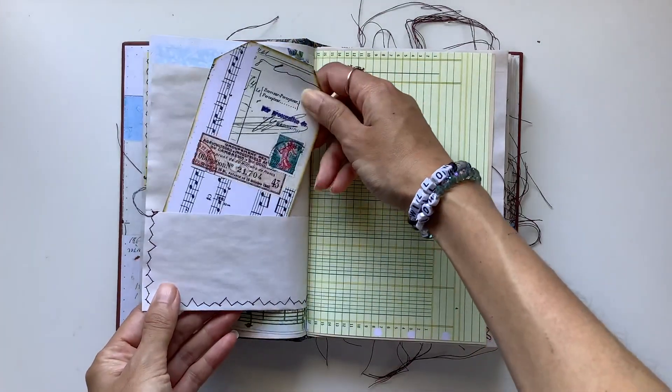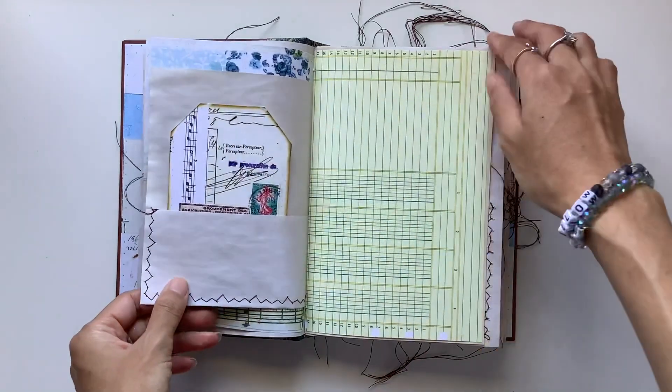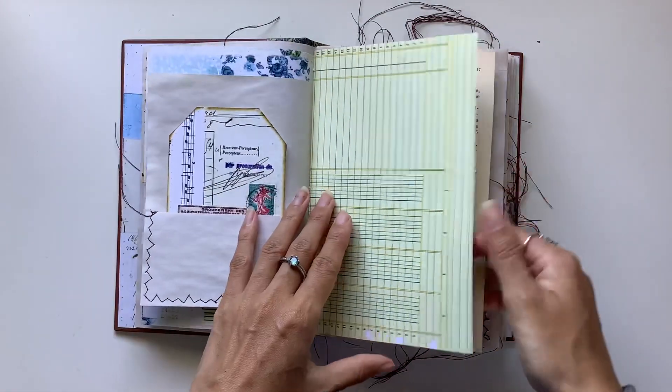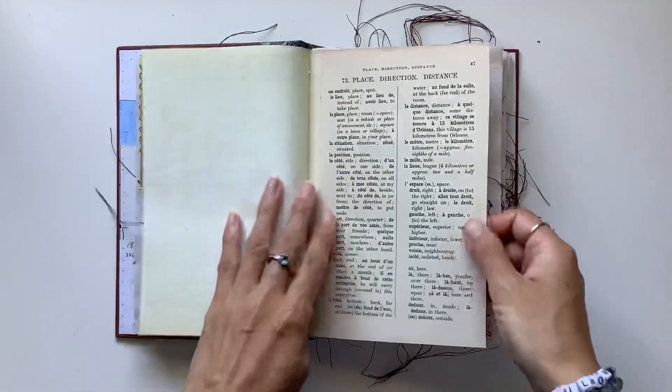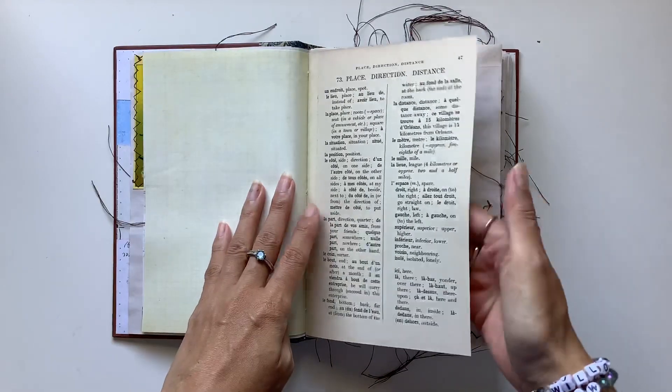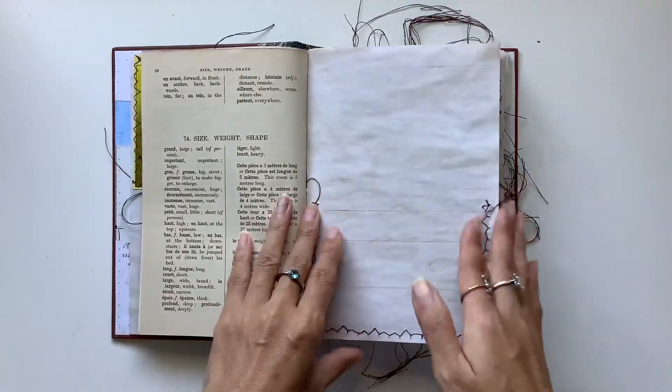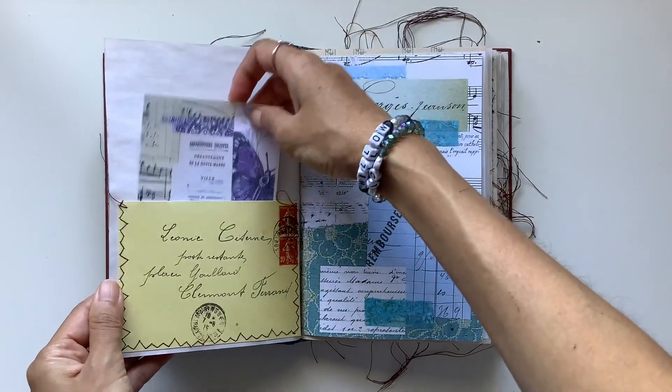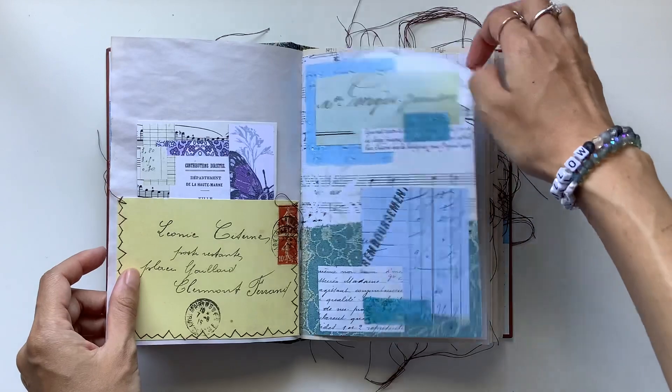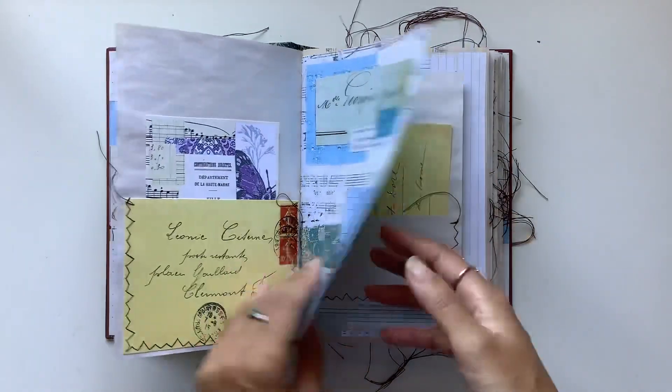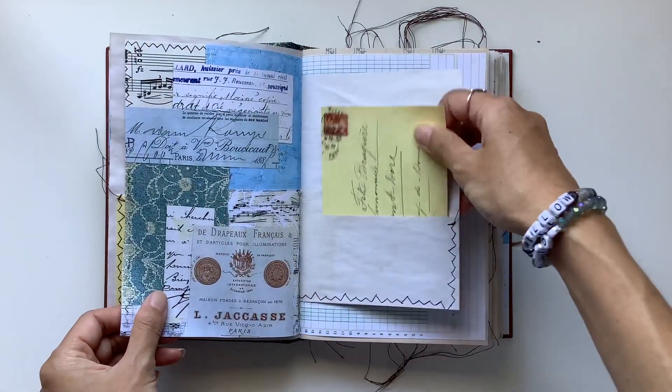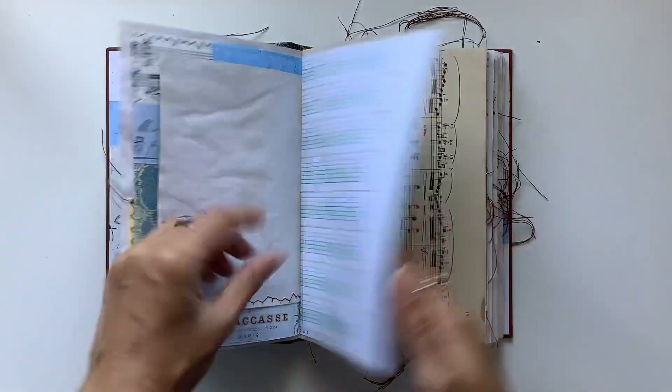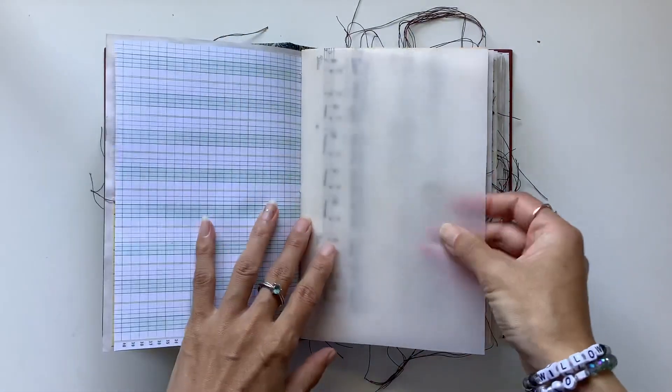These are the vintage French collage tags. This is the vintage ledger paper and this is vintage French book page. Then we've got vintage French envelopes and more of my collages used as journal cards. Love this page here. Envelope there and all different types of papers.